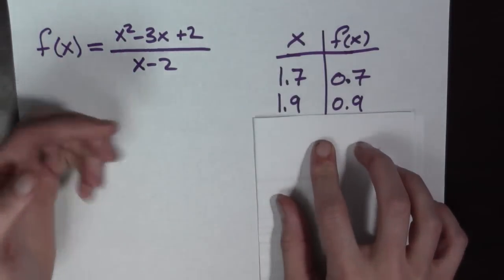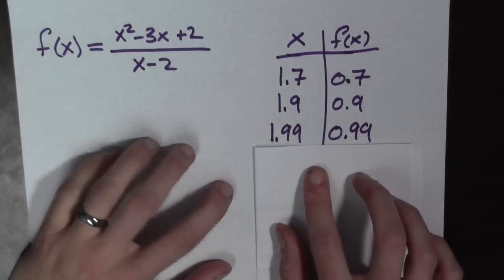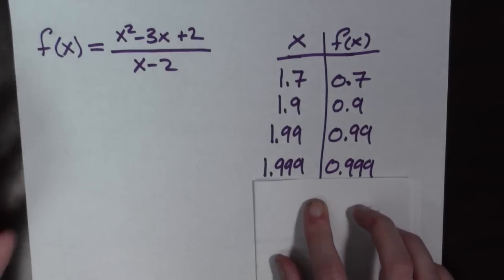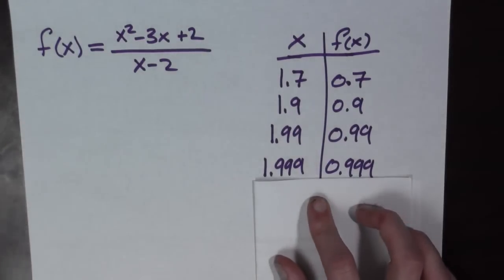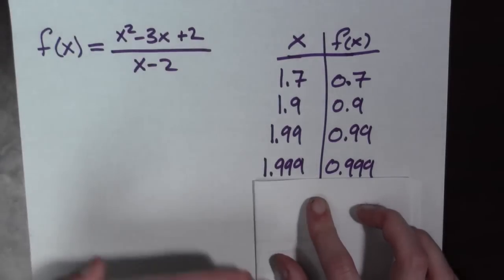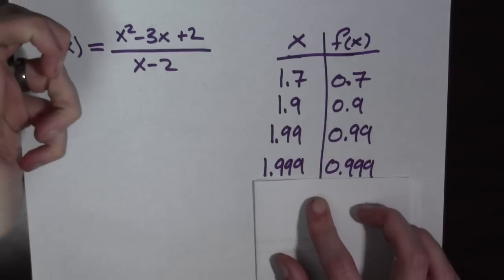If we plug in 1.9, that's getting closer to two, we get 0.9 out. If we plug in 1.99, we get 0.99 out. If we plug in 1.999, we get 0.999. As we approach two from below with x, f of x gets closer and closer to 1.